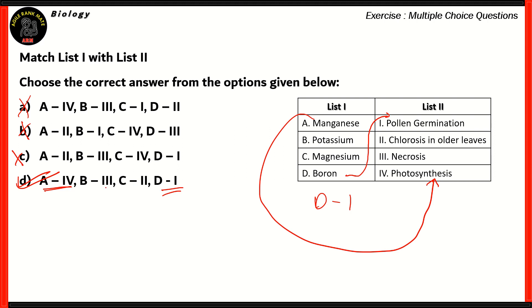So, therefore, option D is the right option. C is incorrect. So, that means B3 and C2 are correct. A lack of potassium causes necrosis and a lack of magnesium causes chlorosis in older leaves. Manganese is present in photosynthesis and boron is responsible for pollen germination. So, that's how we solve match type questions. Find the easiest match and then try to eliminate options to get the right one.